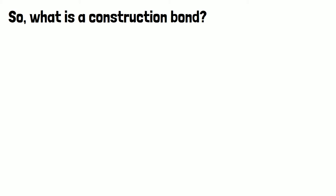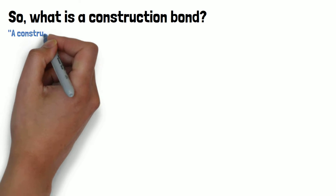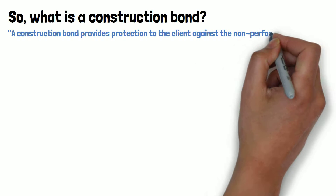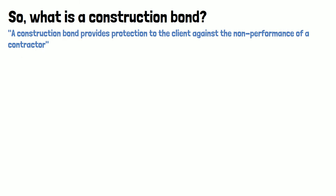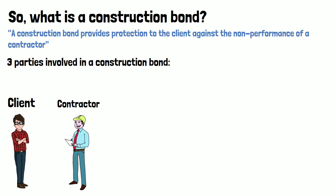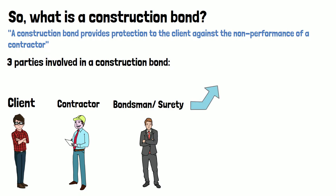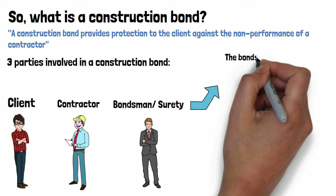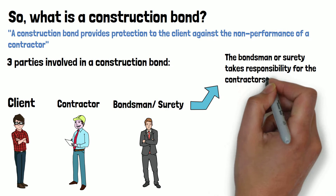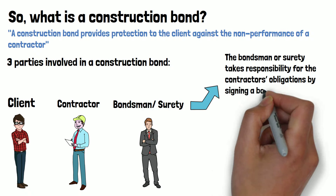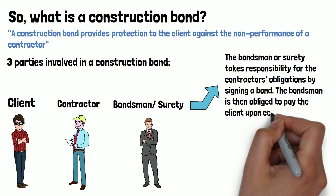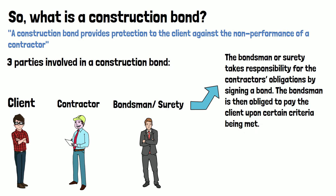So what is a construction bond? Put simply, a construction bond provides protection to the client against the non-performance of a contractor. There are three parties involved in a construction bond: the client, the contractor, and a bondsman or surety. The bondsman or surety takes responsibility for the contractor's obligations by signing a bond and is then obliged to pay the client upon certain criteria being met.